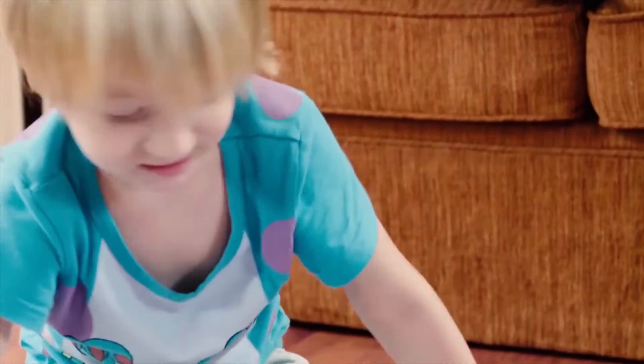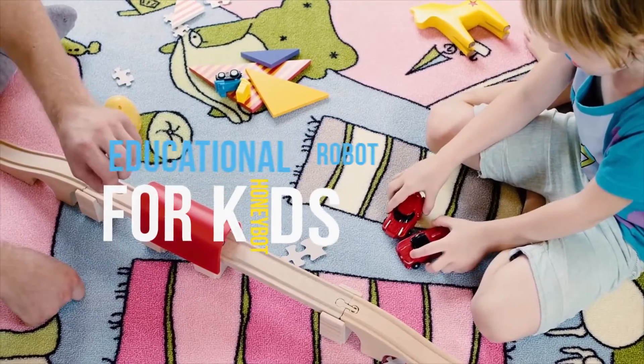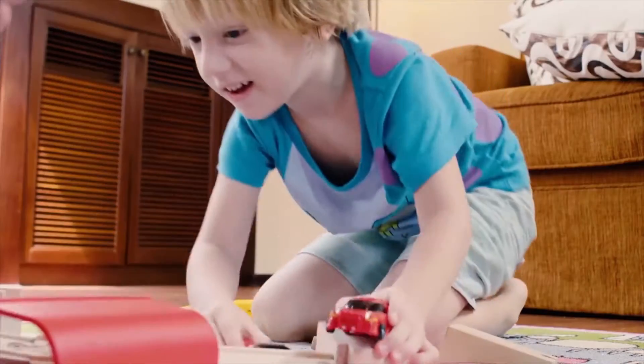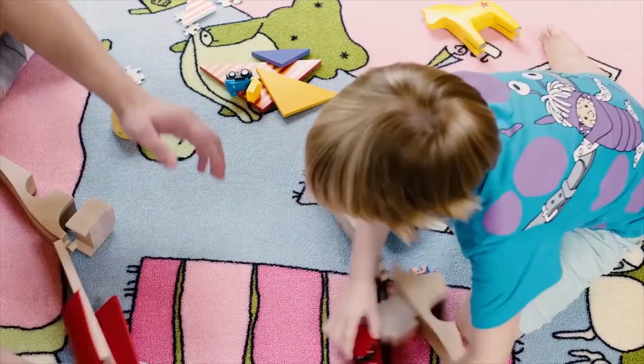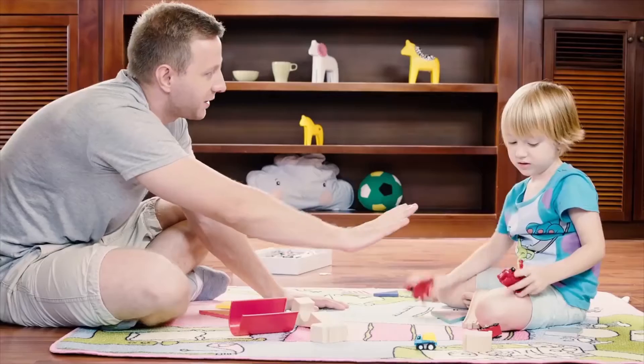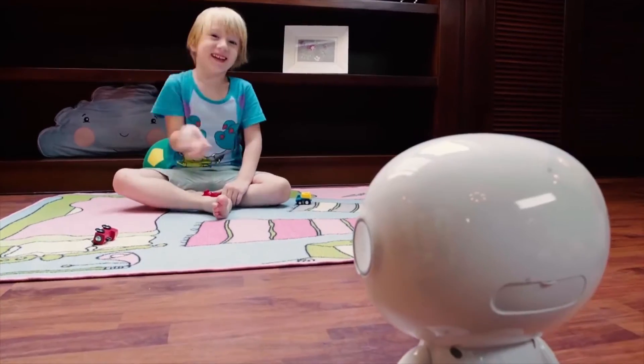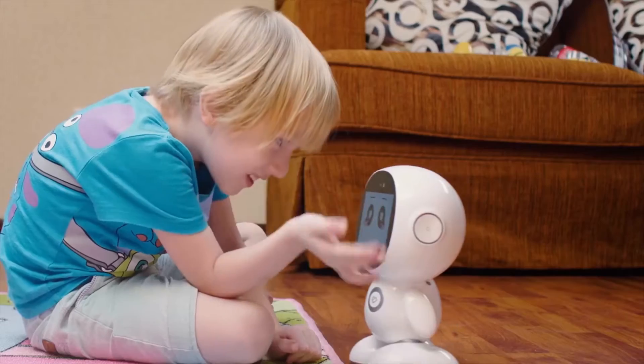Since kids get distracted easily, parents are always concerned about how to best communicate with their kids. As education experts say, it is crucial for parents to help kids form good habits in this stage. Now we have HoneyBot, the first educational family robot designed especially for young kids.